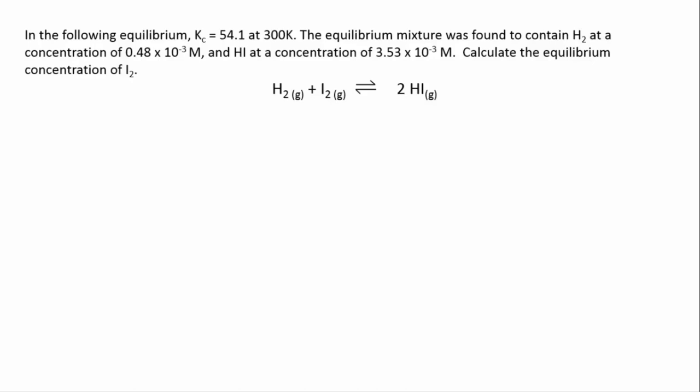We're told Kc at a particular temperature and we're told that at equilibrium the mixture is found to contain hydrogen at this concentration and hydrogen iodide at this concentration, and you're asked to calculate the equilibrium concentration of iodine.